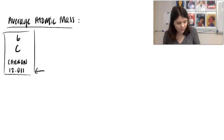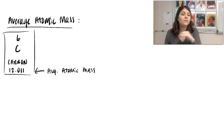So remember, this right here is the average atomic mass on every periodic table. Underneath, at the very bottom, there's an average atomic mass for every single element, because it's an average.